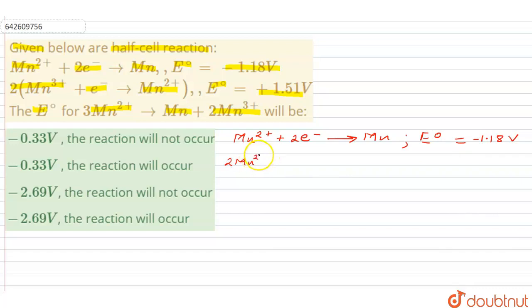Expand the second equation properly, it's going to be 2Mn³⁺ plus 2 electrons, and that gives us 2Mn²⁺. The E⁰ value for the same is plus 1.51 volts.